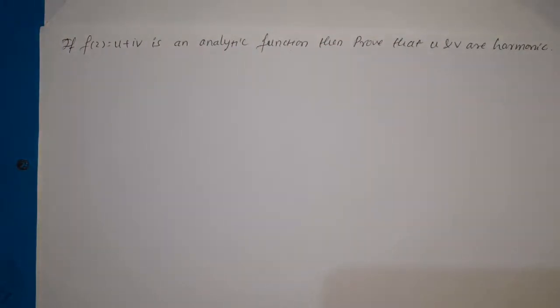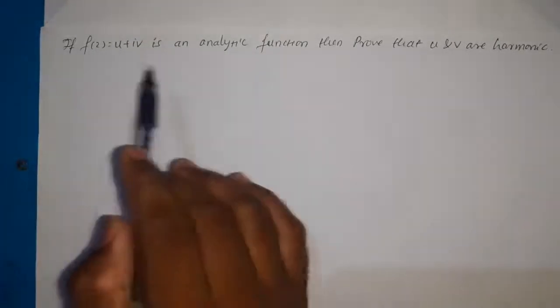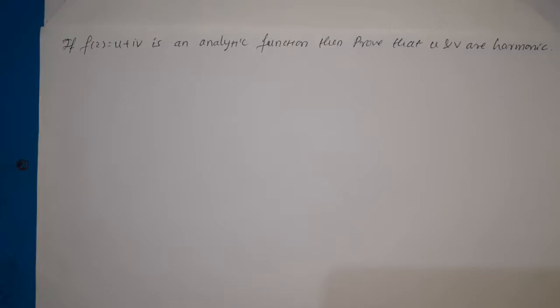The next example: if f(z) = u + iv is an analytic function, prove that u and v are harmonic. Here, f(z) being analytic means it satisfies the CR equations, and we need to show that the real part u and imaginary part v of f(z) are harmonic. A complex variable function is said to be harmonic if it satisfies the Laplace equations.